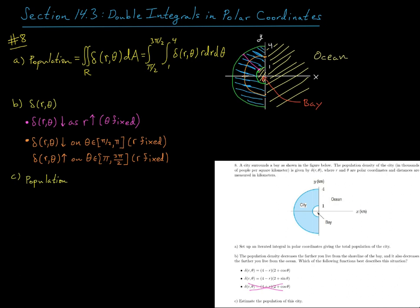What about sine? Well, the problem here is that sine is still going to be decreasing, because sine will go from 0 down to negative 1. And so we know then it's not option 2. And so our density would then have to be this first option, 4 minus r times the quantity 2 plus cos theta.